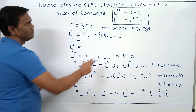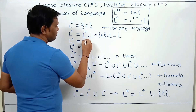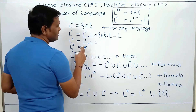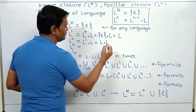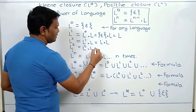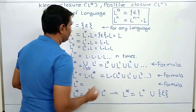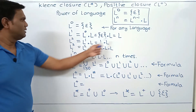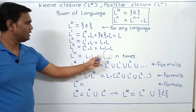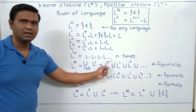Now for L power 2, it is L power 2 minus 1 dot L, which becomes L power 1 dot L. For L power 3, it will be L power 2 dot L, which is L dot L dot L. So L power 1 is L, L power 2 is L dot L, L power 3 is L dot L dot L, and L power n will be L dot L dot L, n number of times.